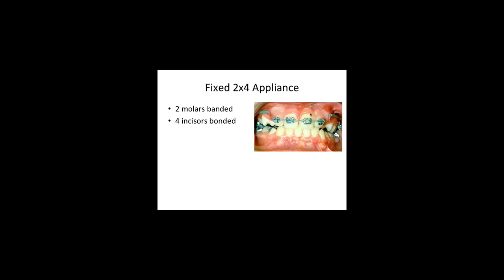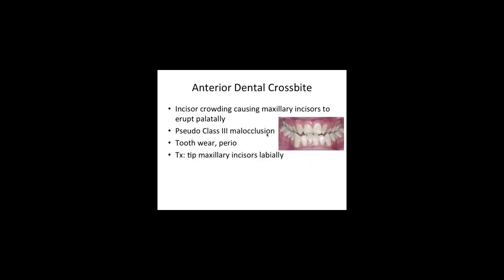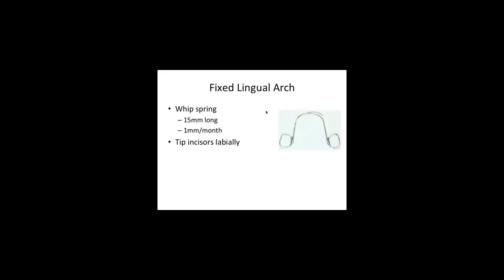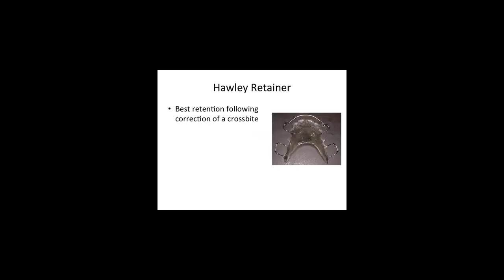Another option for treating anterior dental crossbite is the two-by-four appliance, which means two molars are banded and four incisors are bonded - and you can do a lot with that complex alone. The Hawley retainer is probably the best choice for retention following correction of a crossbite, either anterior or posterior. You get a nice piece of acrylic with decent retention. In this case you would use the labial bow for retention because you're not trying to actively move teeth - it's just a passive appliance for retention.